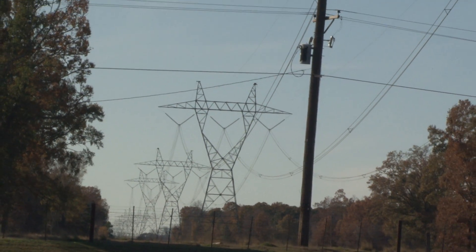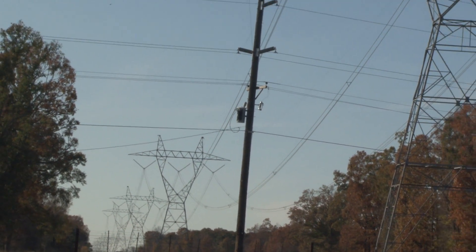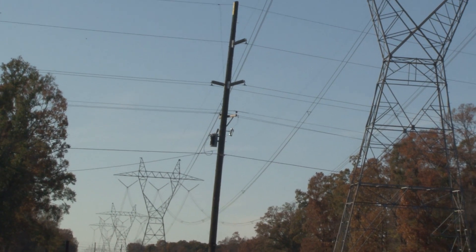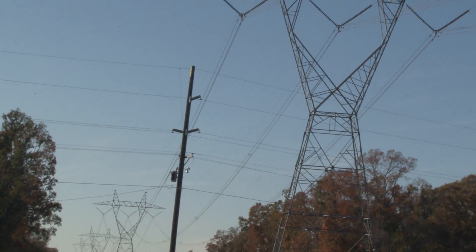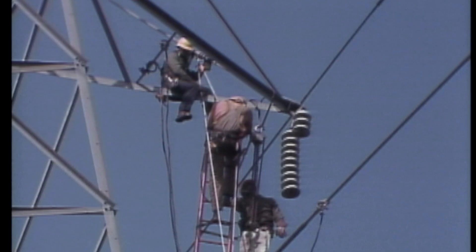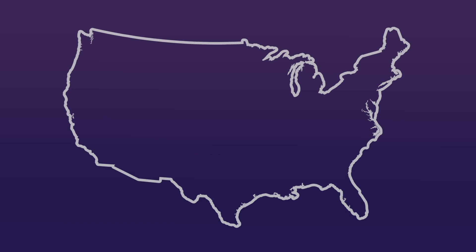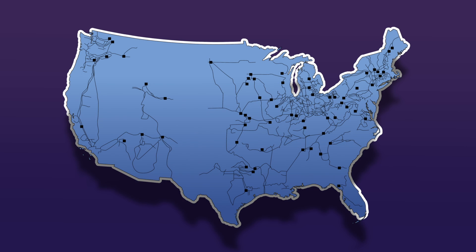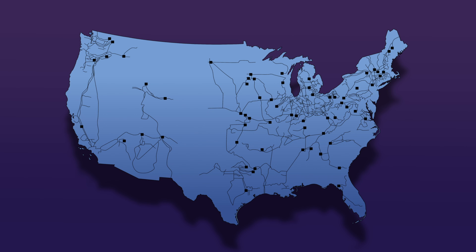It's a big job, moving electricity from where it's produced to where it's used. It's the job of transmission and distribution systems and the people that keep them running. On the largest scale, these power delivery systems are continental networks of major electrical connections, often called power grids.